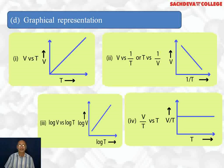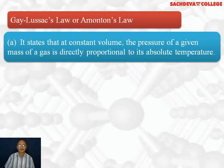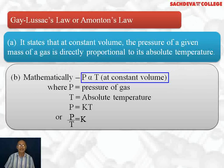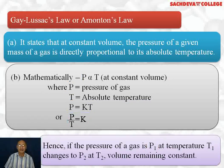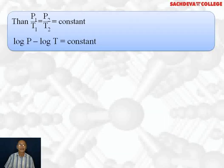When we plot graphs at constant pressure, we call them isobars; when plotted at constant temperature, we call them isotherms. Next we are taking Gay-Lussac's law, also called Amonton's law. It states that at constant volume, the pressure of a given mass of gas is directly proportional to its absolute temperature. Mathematically, P is directly proportional to T, where P is pressure and T is absolute temperature. So P = KT, or P/T = constant = K. Hence if pressure is P1 at temperature T1 and changes to P2 at temperature T2 (volume remaining constant), then P1/T1 = P2/T2 = constant.